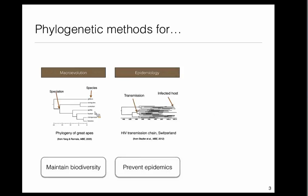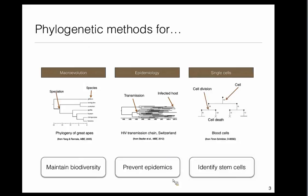The second key application is epidemiology, where each tip represents an infected host and branching events are transmission events between infected hosts. The genetic data we use is the pathogen data from each infected host — not the host genetic data — so when we reconstruct such phylogenies we reconstruct the ancestry of the pathogen, meaning the transmission history. Similarly to macroevolution, we want to understand the dynamics giving rise to those trees, which allows us to understand how pathogens spread, how quickly, and what we can potentially do to control or prevent further epidemics.